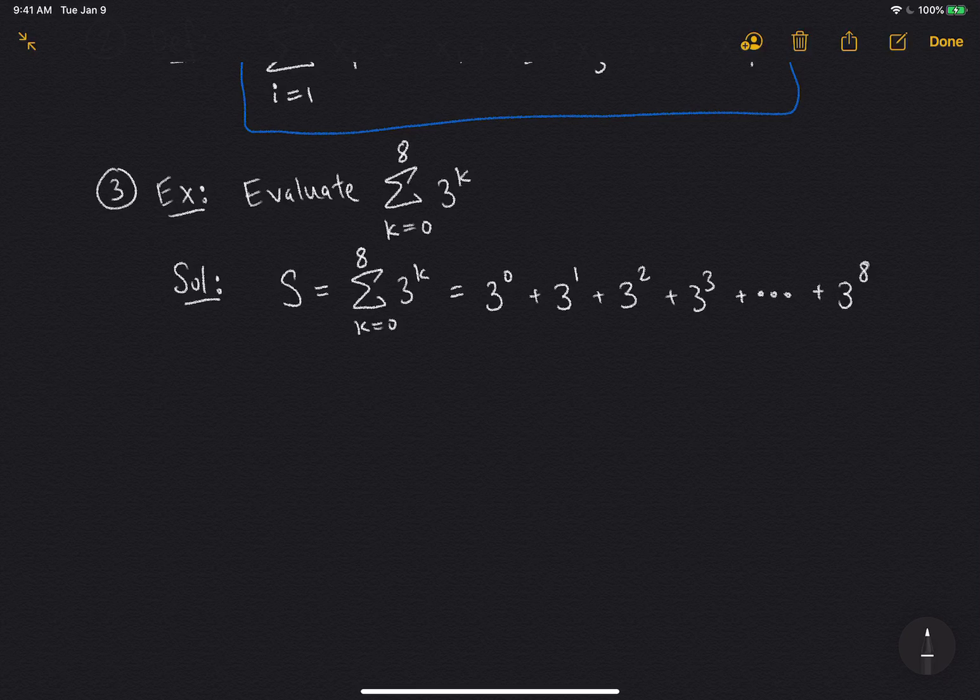So there's an algebraic trick you can use here. It's a little bit of a trick. Let's try multiplying this whole expression by 3, so 3S. Well, then I have to multiply each of these terms by 3. So the first term, 3 times 3 to the 0 is 3 to the 1. 3 times 3 to the 1 is 3 to the 2. 3 times 3 to the 2 is 3 to the 3. 3 times 3 to the 3 is 3 to the 4, and so on.